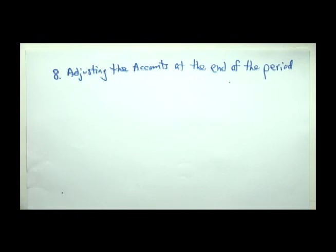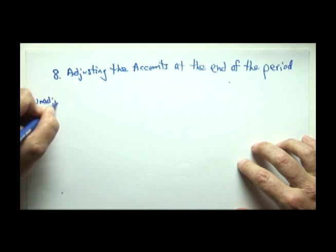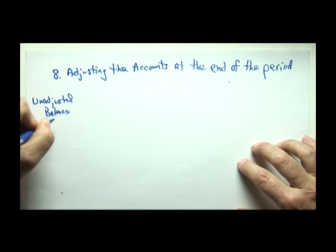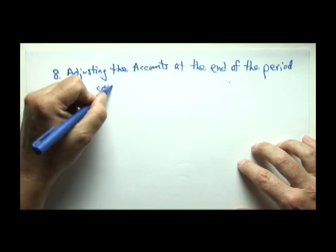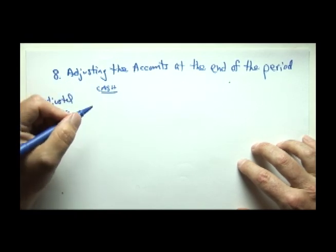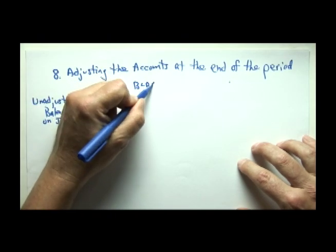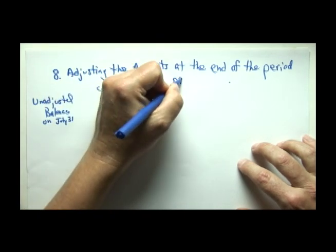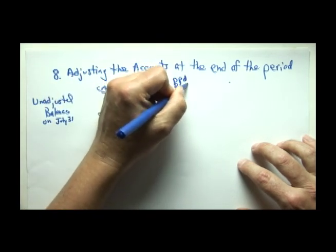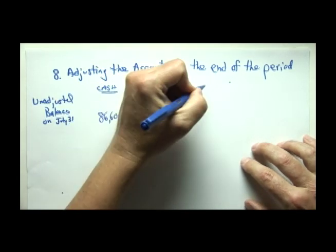We're going to take the balances at the end of the month, and we're going to call these unadjusted balances on, let's call it July 31, the end of the month. And we'll start with cash, and the unadjusted balance was $86,600. Building was $180,000. Prepaid rent was $2,400.